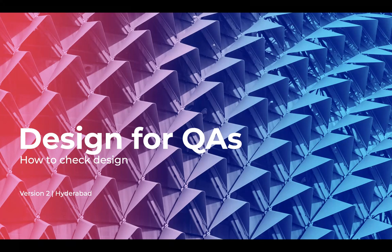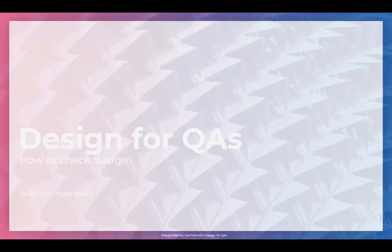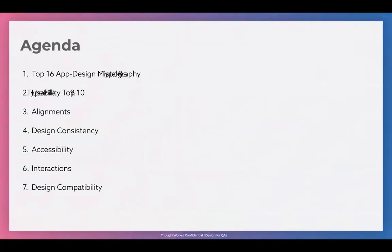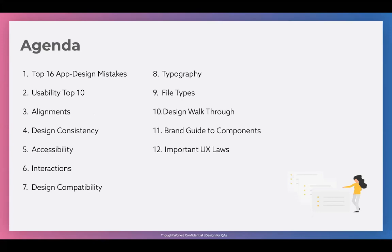This will be the second session for Design for QAs — done internally before, now going external. I'll start off with the agenda. We'll begin with the top 16 app design mistakes that designers make, and how you as QAs can check on that. Then usability top 10 — what are the top 10 usability parts of any design language that a QA can check?